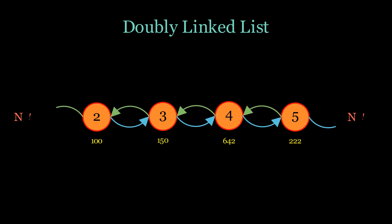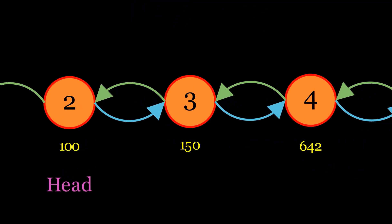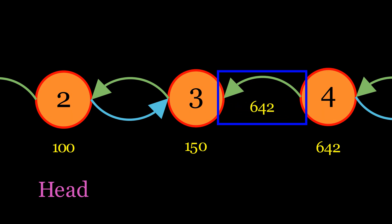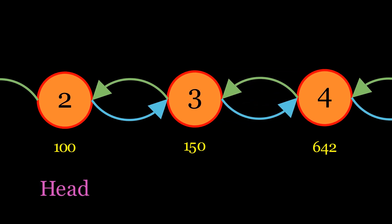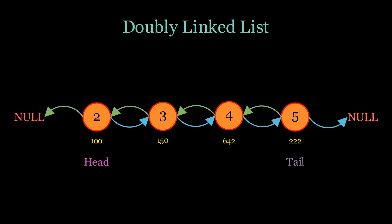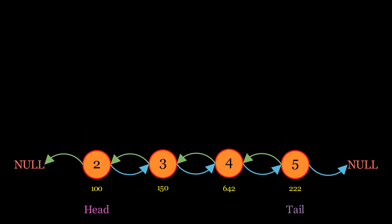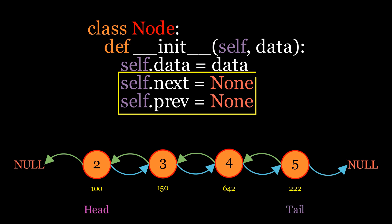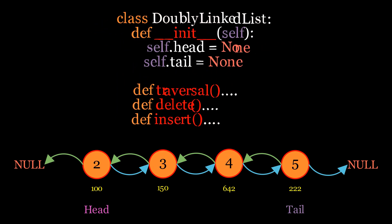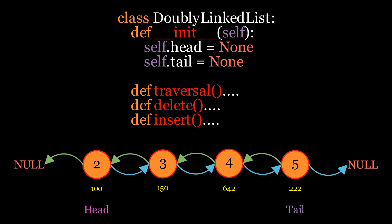Another type is the doubly linked list. In a doubly linked list, each node contains two pointers: one pointing to the next node and the other pointing to the previous node. This allows for bidirectional traversal of the list. Because each node has an additional pointer compared to a singly linked list, a doubly linked list uses more memory. However, it provides the advantage of allowing traversal in both directions. The node class now includes both next and previous pointers, and the doubly linked list class similarly includes head and tail pointers, initially set to None.